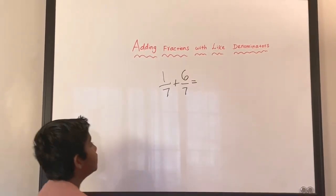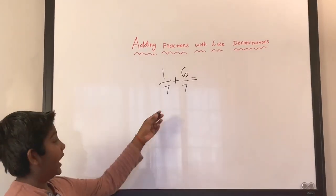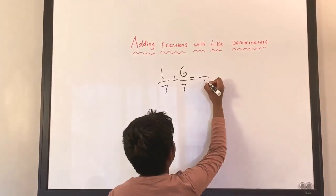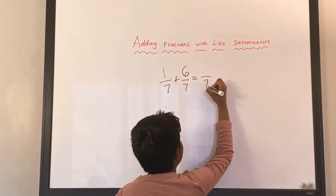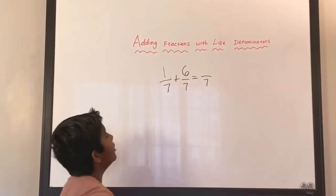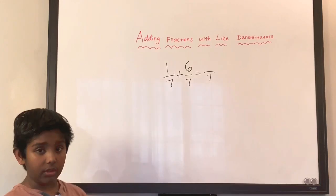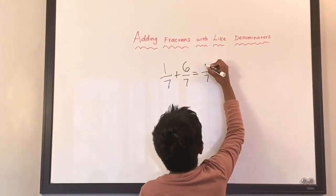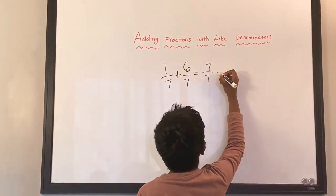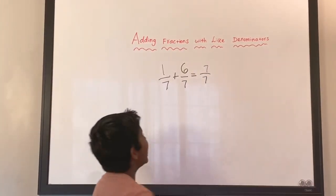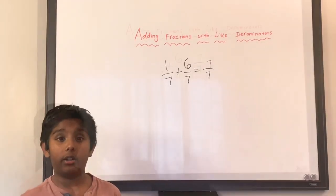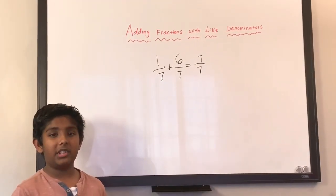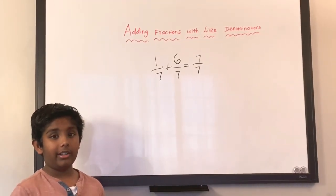We have the same denominator, so we put it as itself — seven. Then we have to add the numerators: six plus one equals seven. So seven over seven, and that equals one whole.